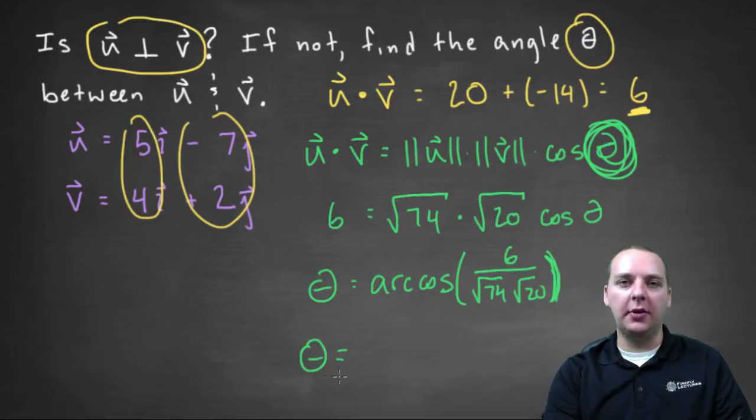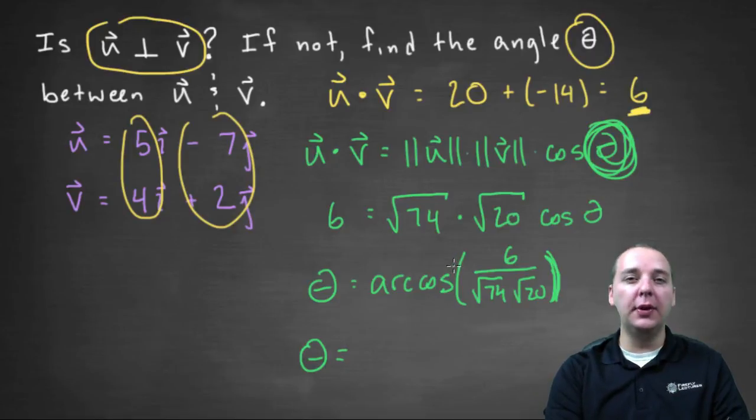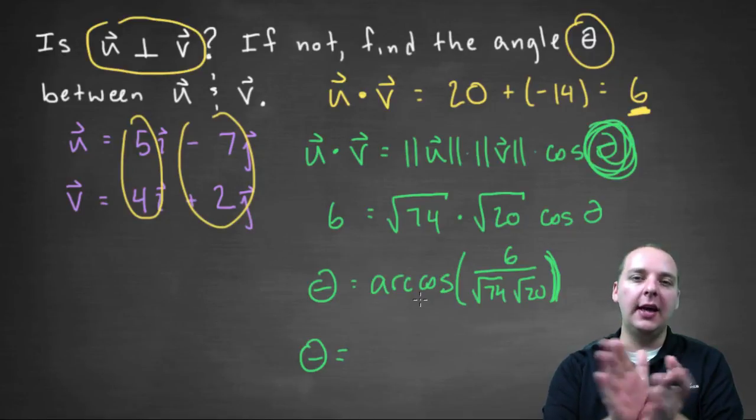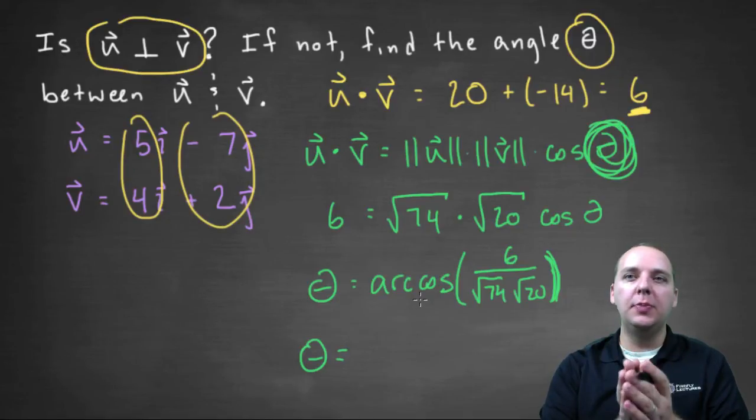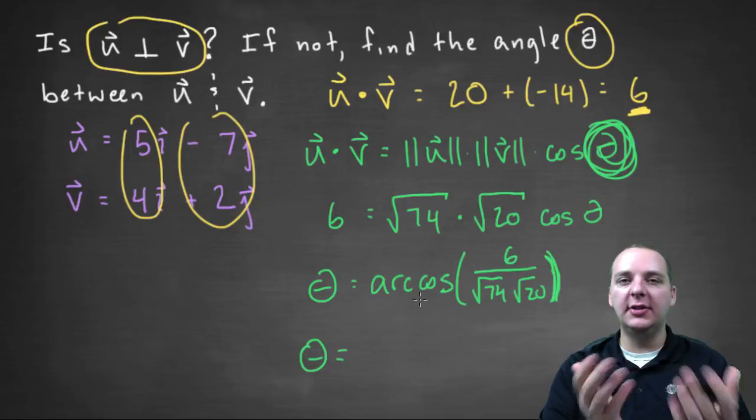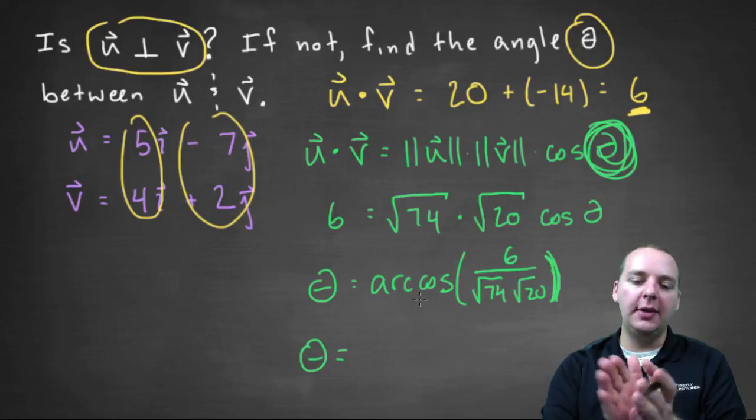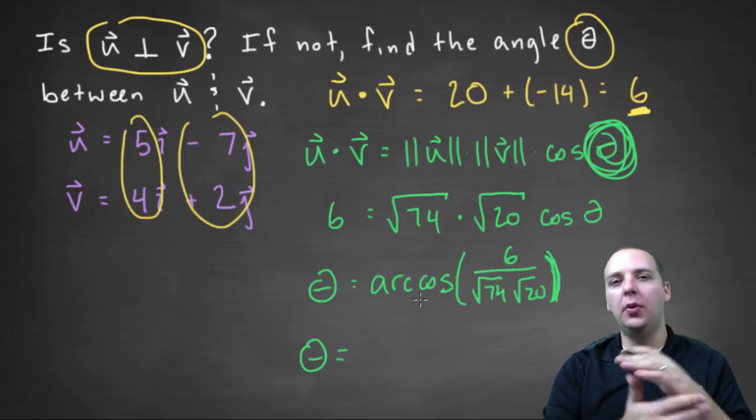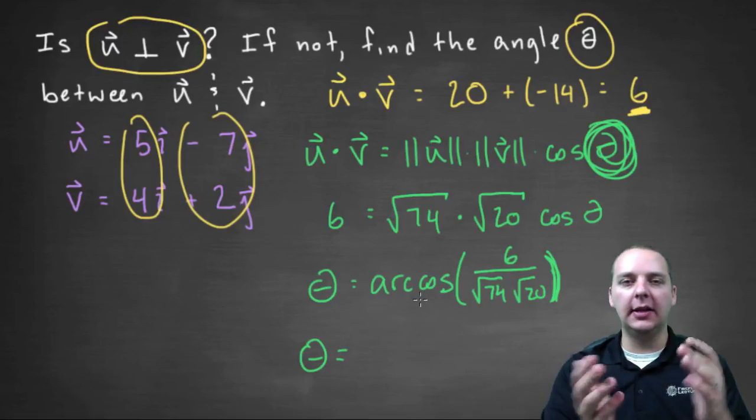So we would get out our calculator, and be careful with your parenthesis and things like that. For most of these problems you'll usually want to put your calculator in degree mode, unless your instructor tells you different, just because if you're finding the angle between two vectors, most people would understand better having an angle of twenty-seven degrees better than one point four radians. They understand degrees a little bit better than radians I think.